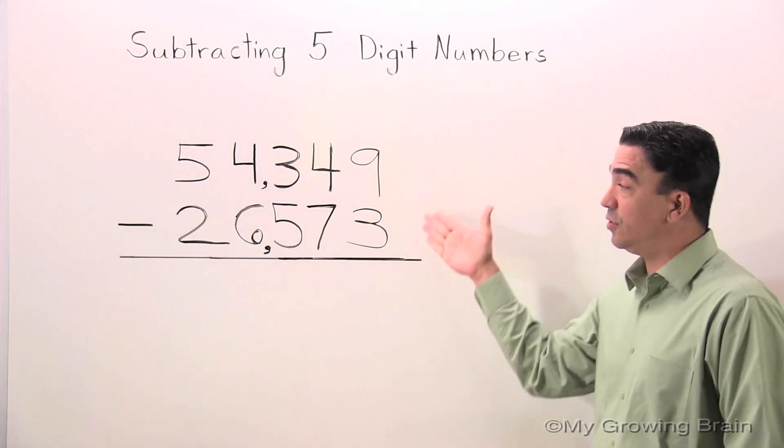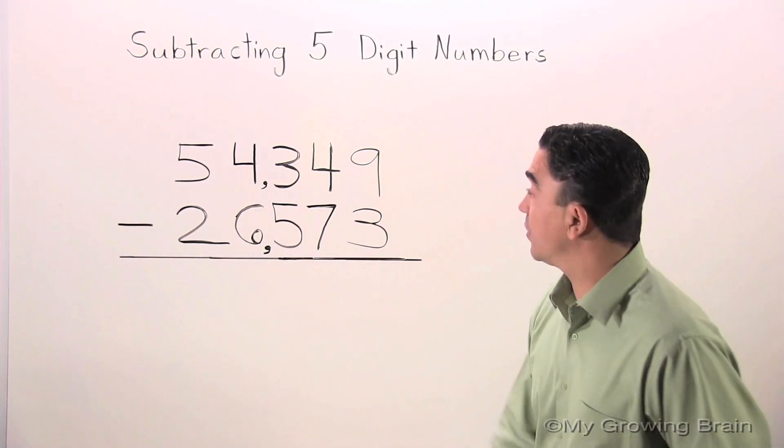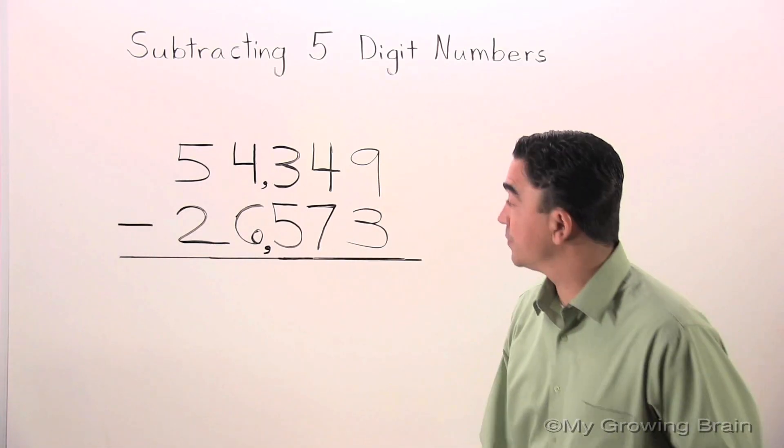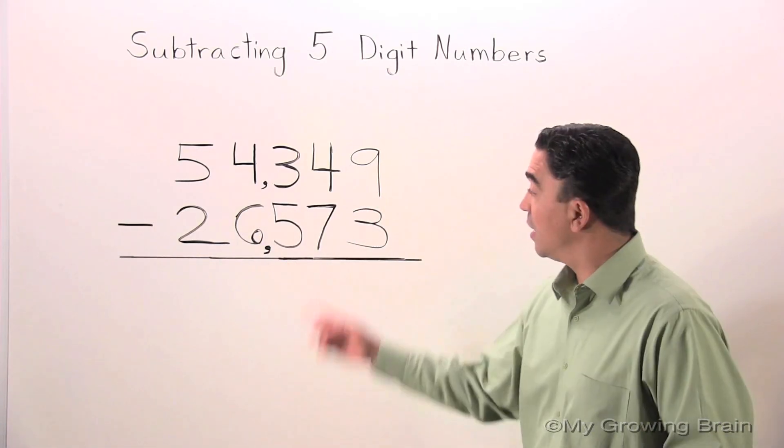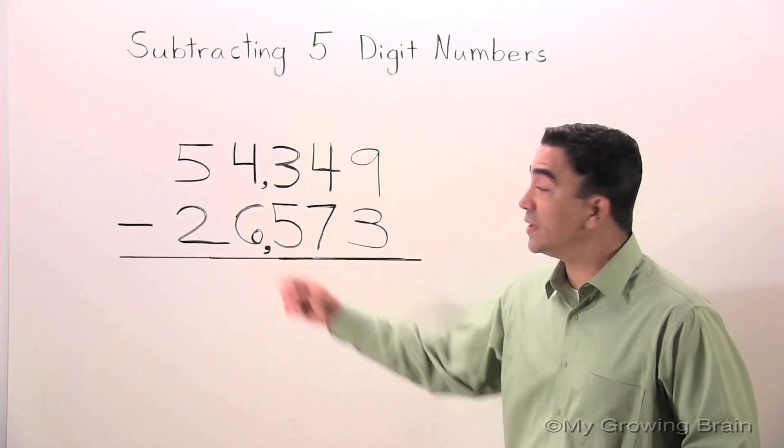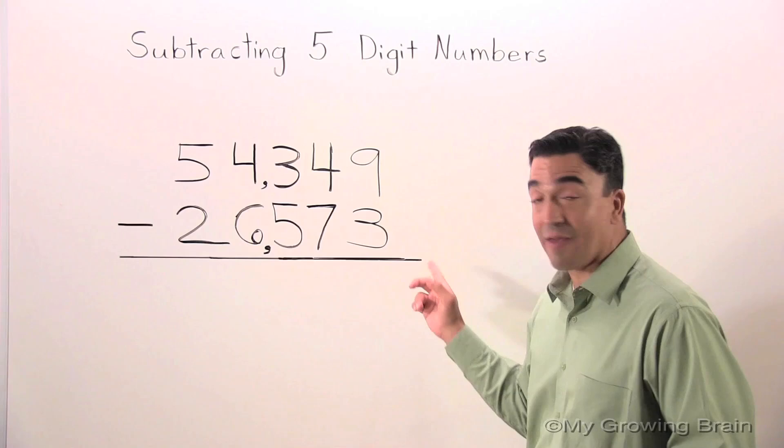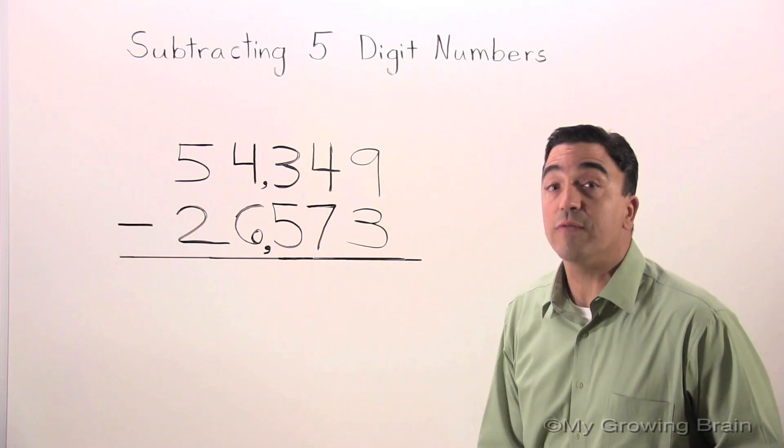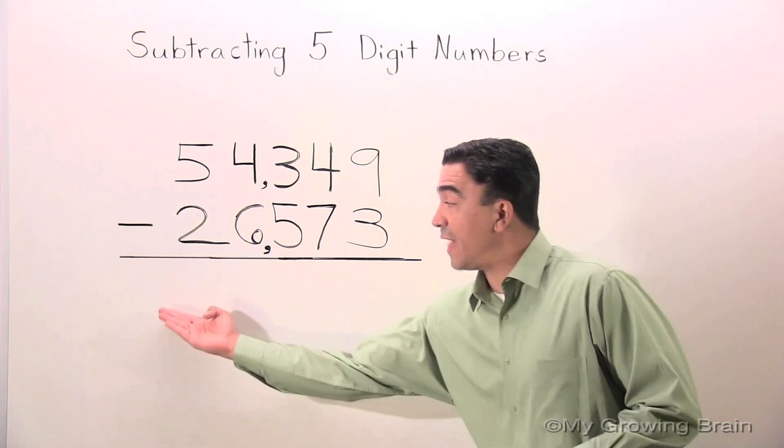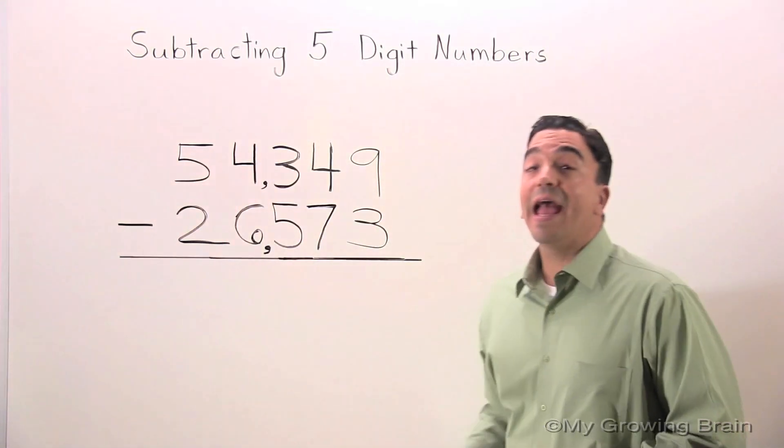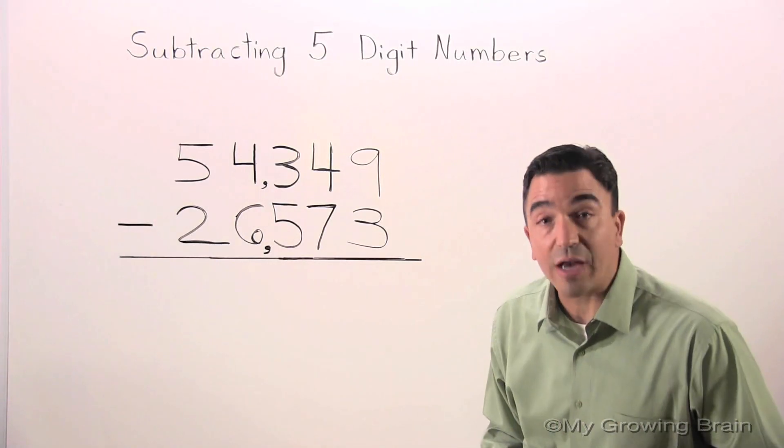On the board, you'll notice I have two five-digit numbers: 54,349 and 26,573. I'm going to subtract 26,573 from 54,349. That will give me the difference. The difference is the answer to a subtraction problem.